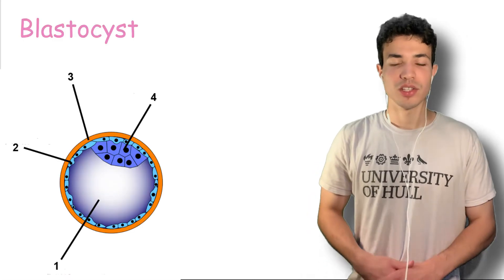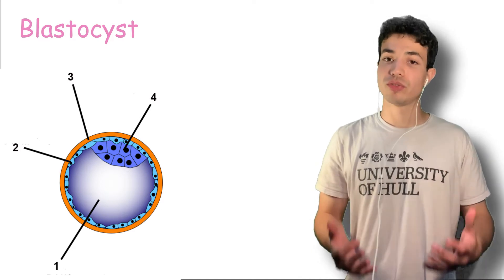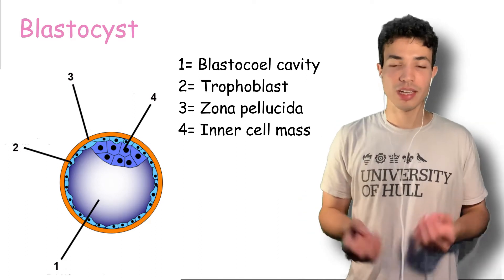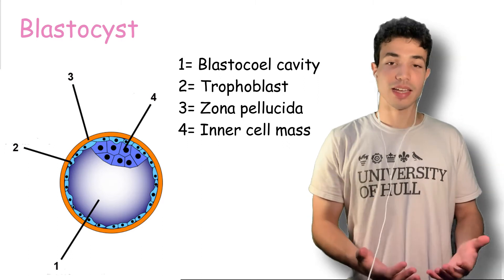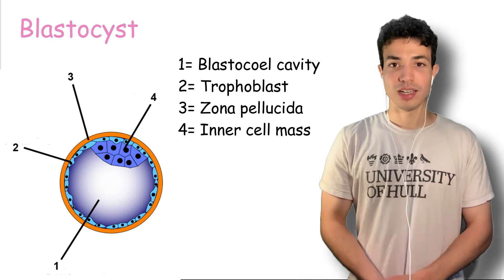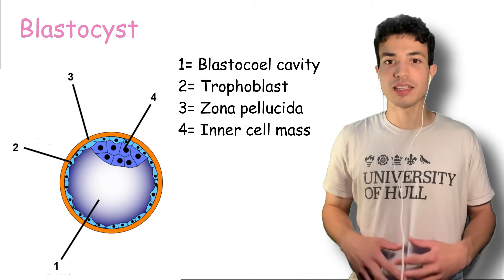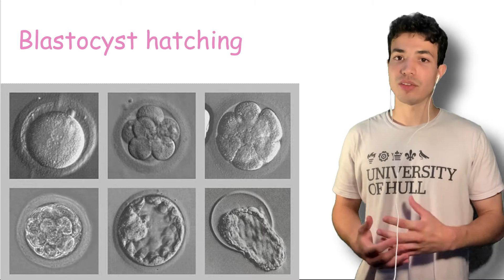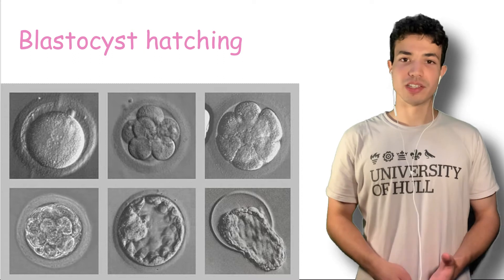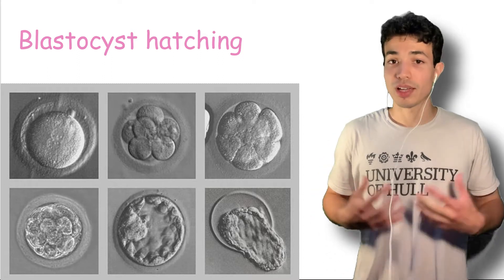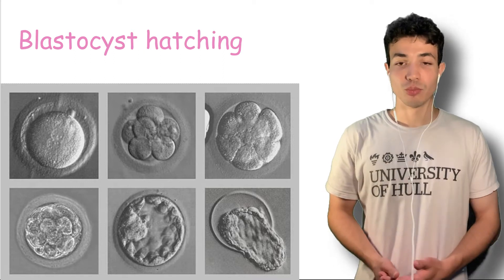The morula will develop into the next important stage called a blastocyst. The main characteristic of the blastocyst is the presence of a fluid-filled cavity called the blastocoel cavity. This happens by cells moving to the outer portion and pumping fluid in to create that cavity. At the blastocyst stage we have our first differentiation of cells — a blastocyst will contain an inner cell mass and a trophoblast. This blastocyst is encapsulated by the zona pellucida until hatching, and this step is very important for implantation because if the zona pellucida is still there it won't be able to interact with the lining of the uterus, resulting in the death of that embryo.